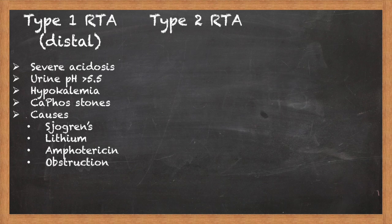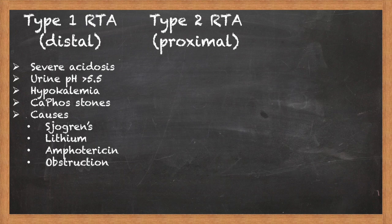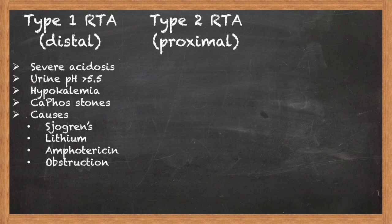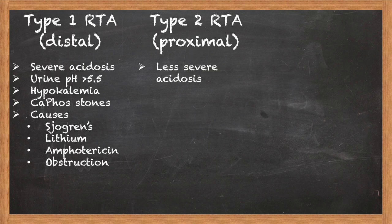Moving to the next RTA, which is RTA type 2: this is a proximal RTA, again referring to the affected portion of the nephron. The proximal convoluted tubule is responsible for the lion's share of reabsorption of filtered substances, and bicarbonate is one of the most important of these. Unlike sodium and other substances, the predominant means for bicarbonate reabsorption is not through a channel or a transporter, but rather through an indirect mechanism. An enzyme called carbonic anhydrase will convert carbonic acid — the product of bicarbonate binding with a proton — into water and carbon dioxide. The carbon dioxide is able to cross into the proximal tubular epithelial cell, only to be converted back to bicarbonate by an intracellular version of carbonic anhydrase. Defects in this process result in decreased bicarbonate reabsorption, and thus metabolic acidosis, which is often less severe than a type 1 RTA, since the acid-base regulation in the distal nephron is still intact.